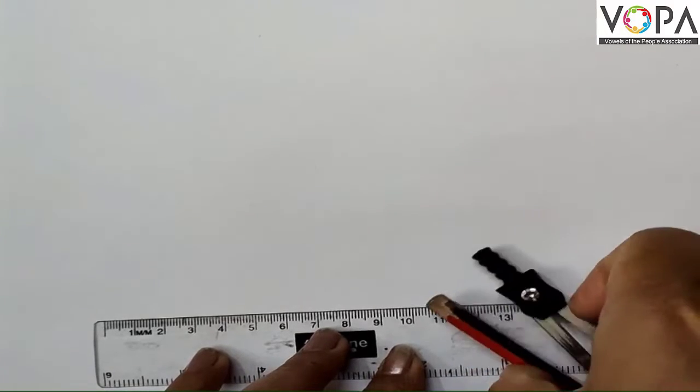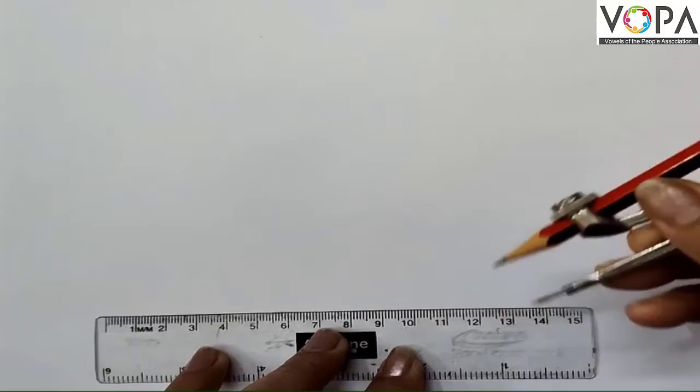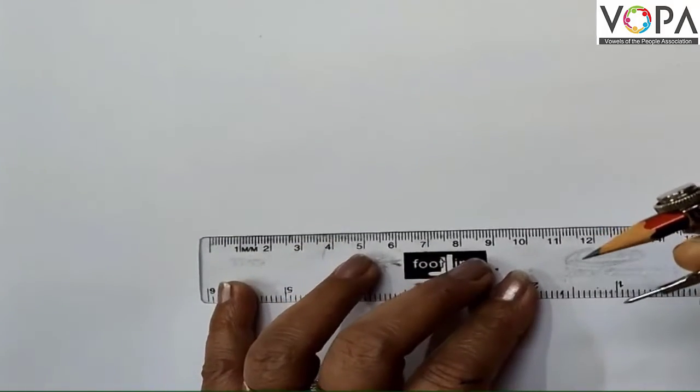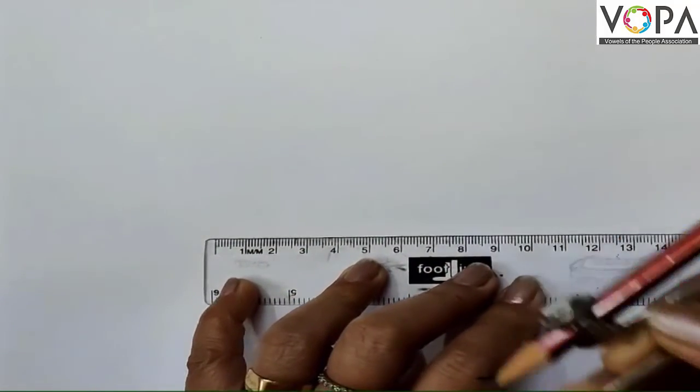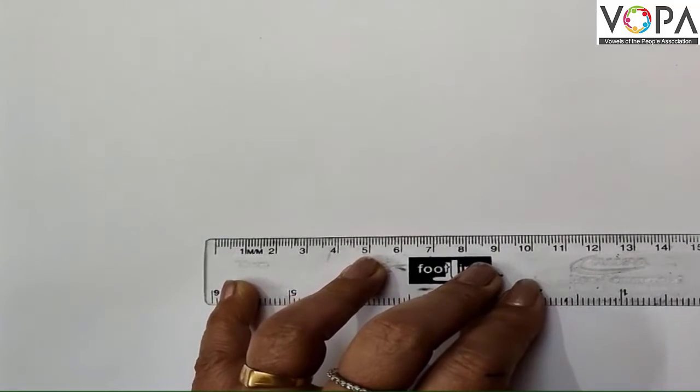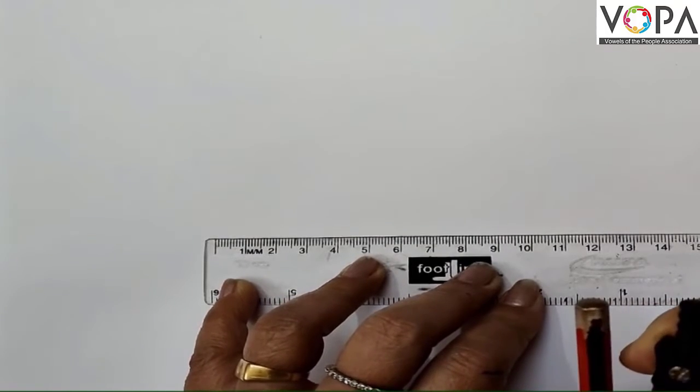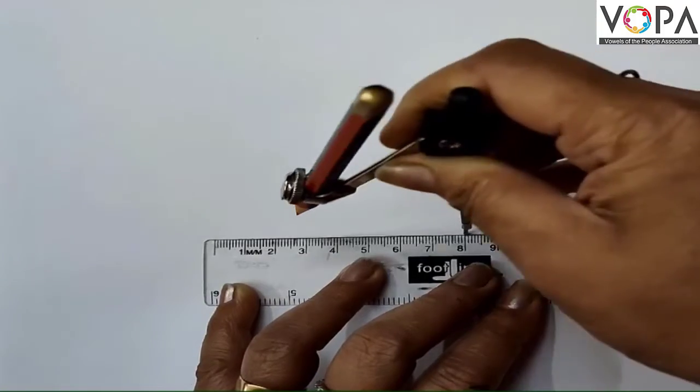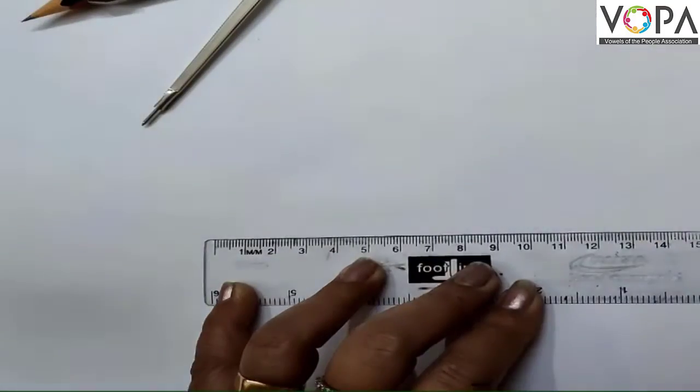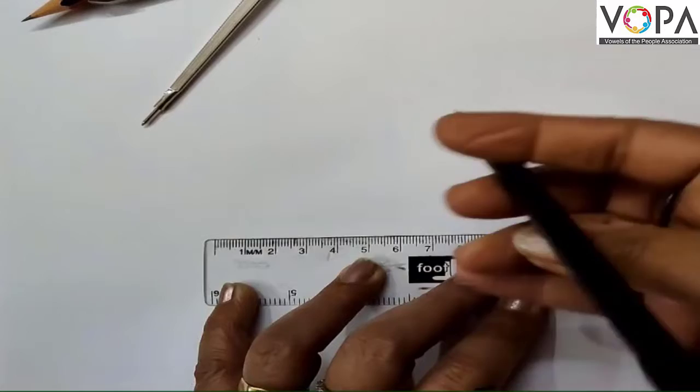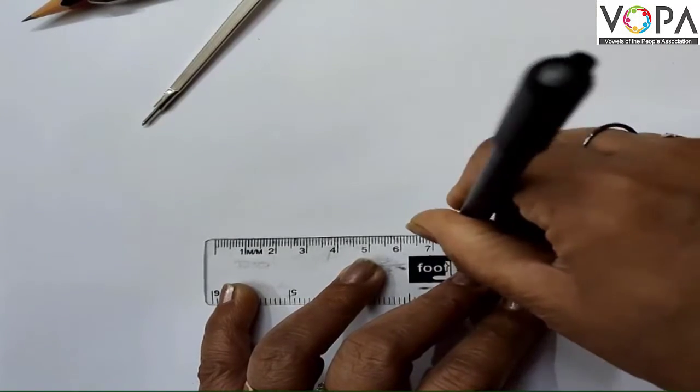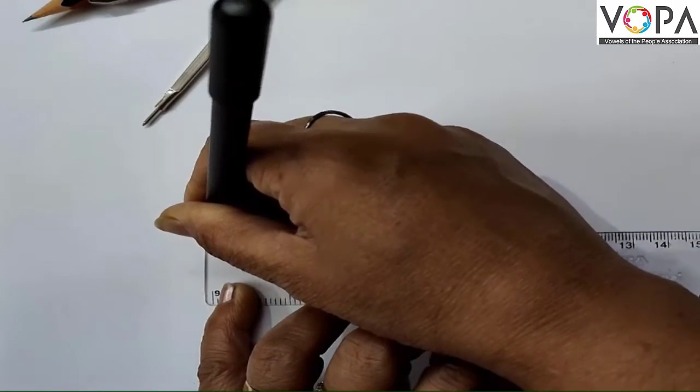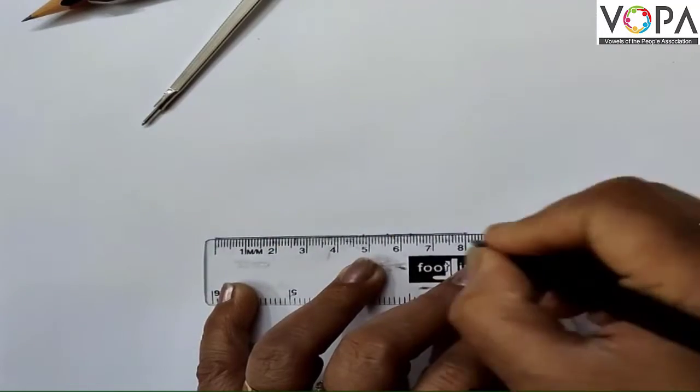In this question, we need to draw an in-circle of an equilateral triangle. For my equilateral triangle, I am taking the measure of 8 cm for all sides. So first, let me draw an 8 cm line. This is 8 cm.